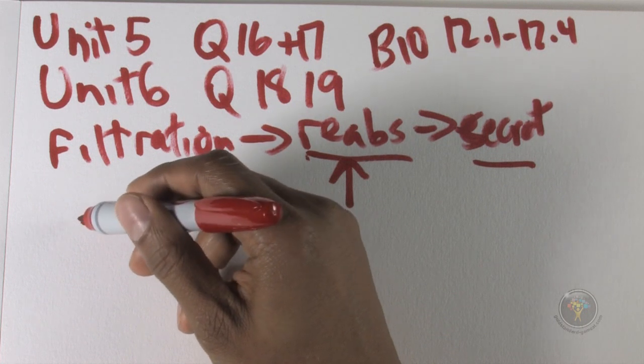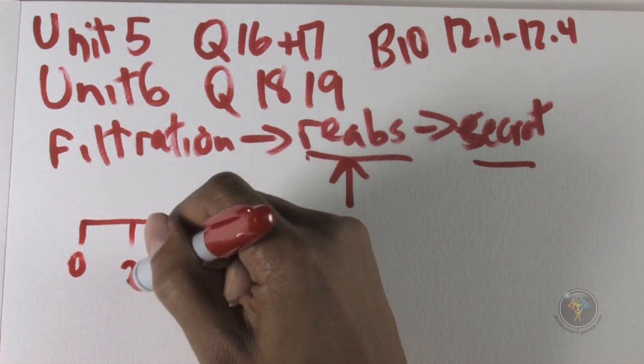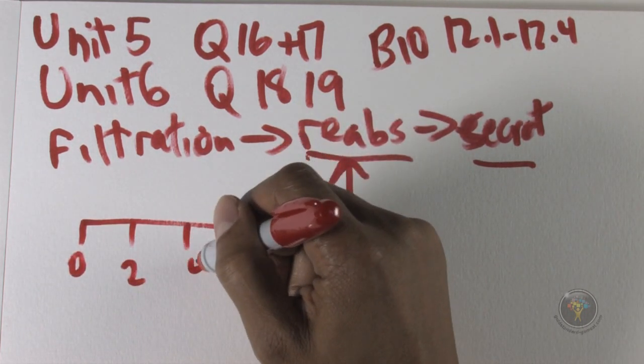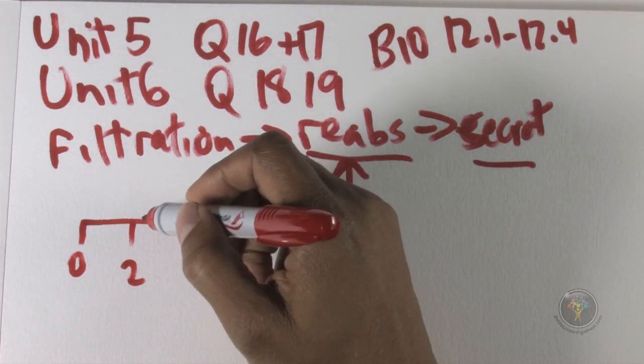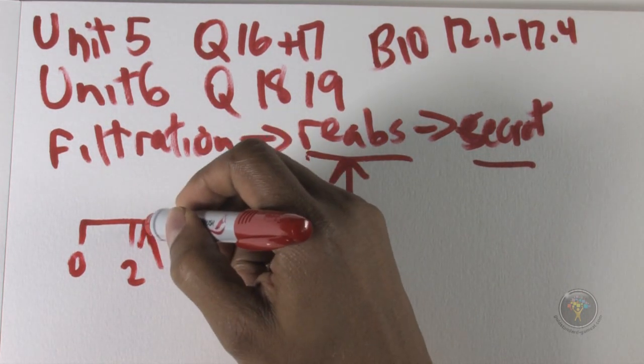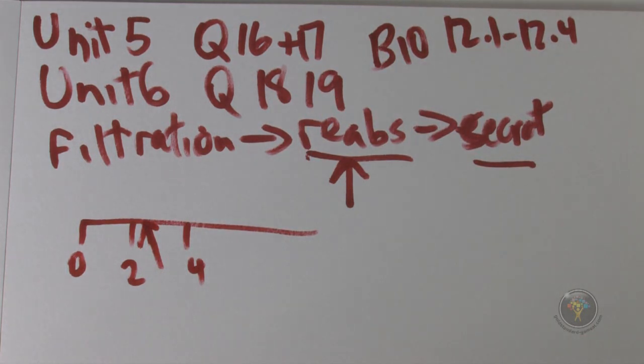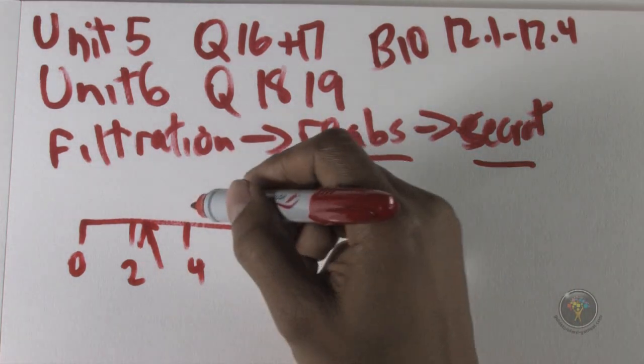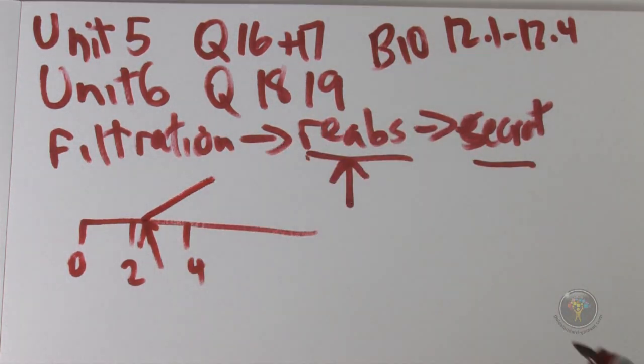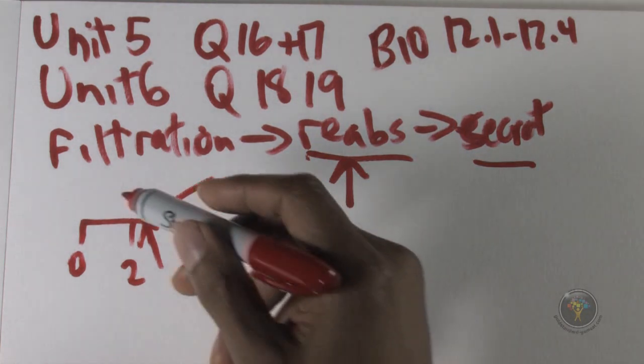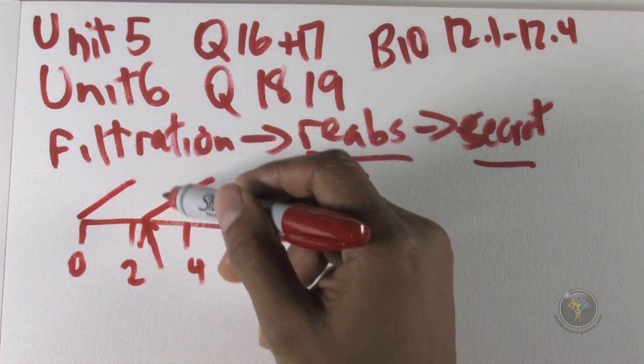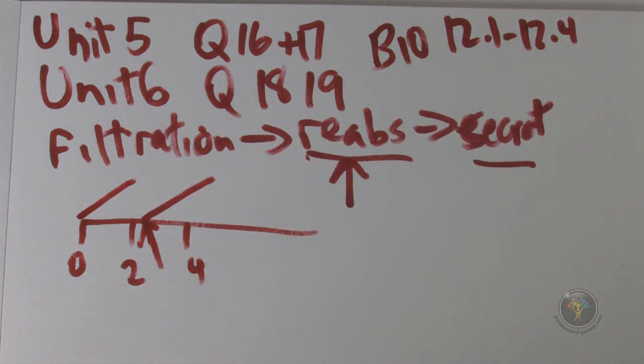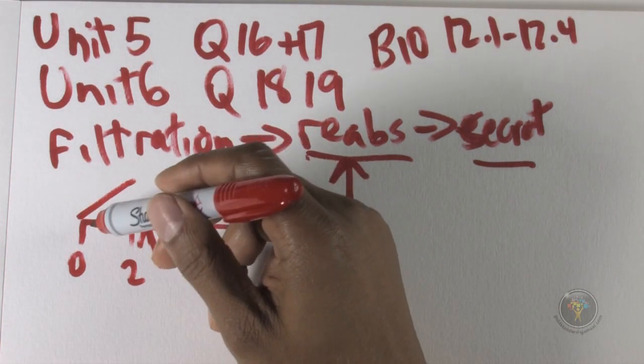On the x-axis you have zero, you have two, you have four, and really right about here at 2.2 is when you start to get some glucose in the urine. You have glucose in the filtrate before that, but you only start getting glucose in the urine at that point. So it means that below this point, the body was able to get back all that glucose into the system.